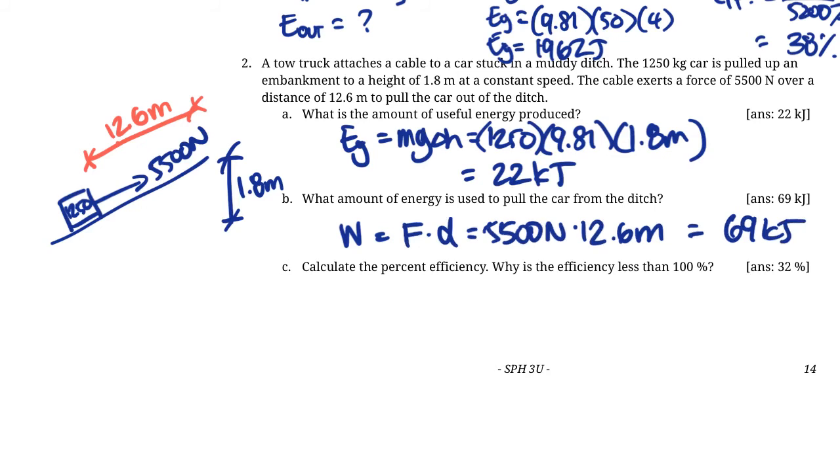The efficiency is essentially the useful work done, which is 22 kilojoules. We just raised it by 1.8 meters. But the actual work it took us to do that was 69 kilojoules. So the efficiency is 22 kilojoules over 69 kilojoules, which gives us a percent of 32.